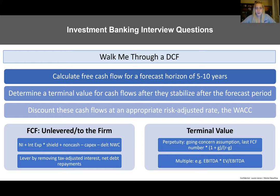The multiples method — more common in practice — involves taking your EBITDA and multiplying it by an EV/EBITDA multiple derived from comparable companies. It's important to pick a comp set that represents what you think the company will look like at the terminal point of your forecast horizon, not what it looks like today. You want a realistic assumption for what it will look like in five to ten years, and that is the conversation a DCF revolves around.